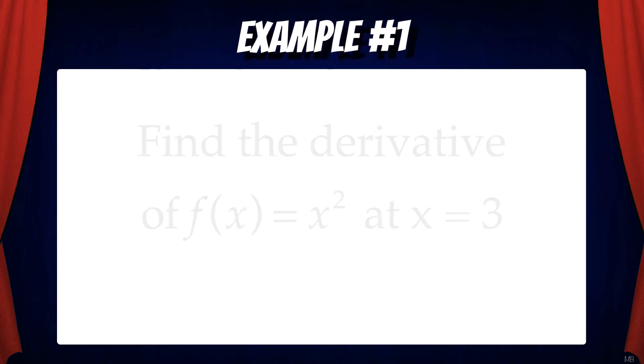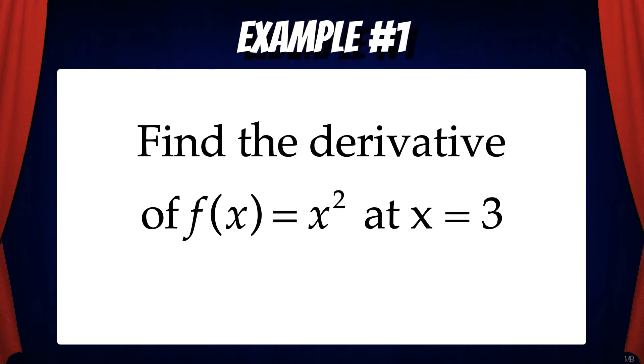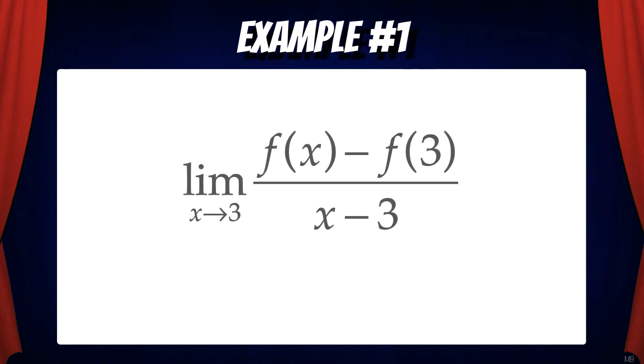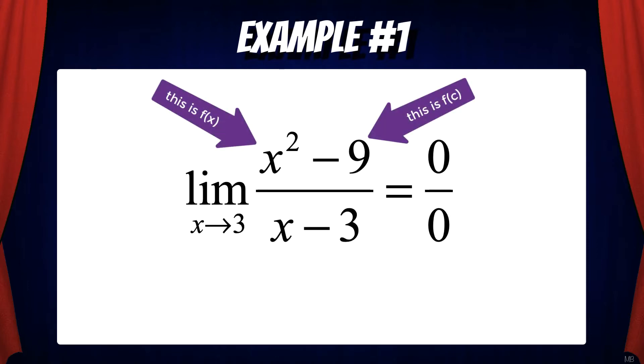So let's see an example of how this can be used. Find the derivative of f of x equals x squared at x equals 3. So we're going to apply the formal definition of a derivative at a point where c equals 3. This gives us the limit as x goes to 3 of f of x minus f of 3 over x minus 3. Now we substitute in f of x equals x squared and f of 3 which is 9. And you can see when we plug in 3 to this limit we get 0 over 0 which is an indeterminate form.